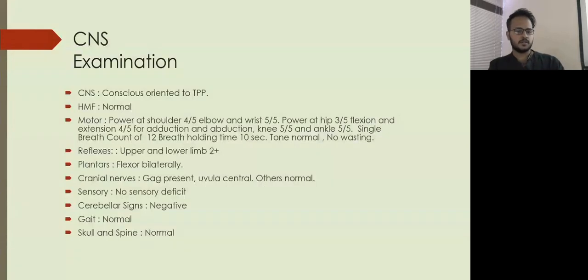CNS examination: he was conscious, oriented to time, place, and person. His higher mental functions were normal. Motor examination - power at the shoulder level was 4 by 5 bilaterally. Elbow and wrist were 5 by 5. Power at the hip was 3 by 5 for flexion and extension, but 4 by 5 for adduction and abduction.